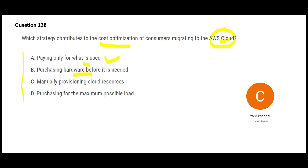Option C says manually provisioning cloud resources. Manual provisioning will not save cost. Whether you provision manually or use automation, that resource will utilize compute and will be chargeable. An EC2 instance — even if manually provisioned instead of using an auto scaling group — is still chargeable. Similarly, an RDS or Redshift database, whether manually or automatically provisioned, is still chargeable. So this cannot be used as a cost optimization lever.